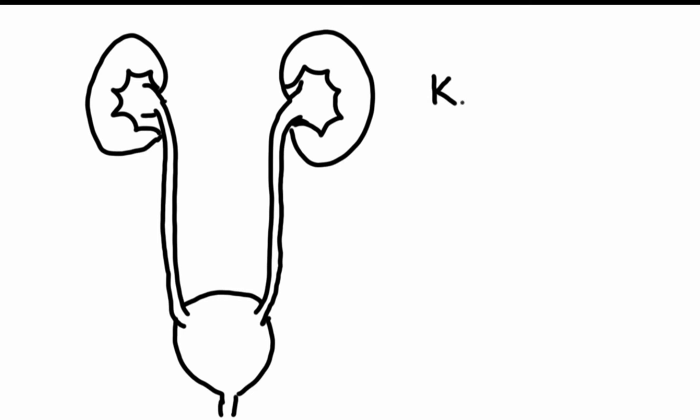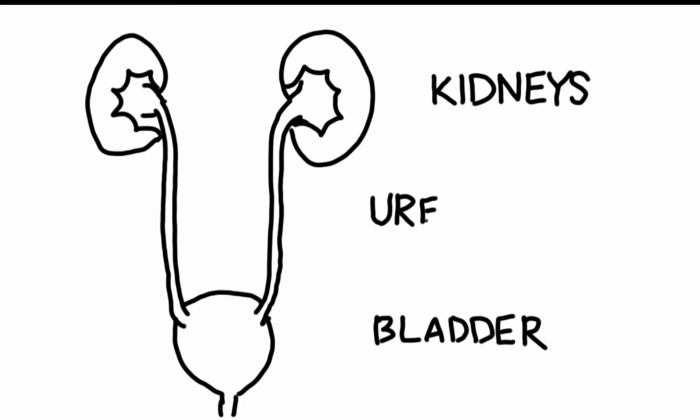Kidneys filter our blood, keeping in good things like protein and letting waste out to make urine. The urine drains from each kidney into the bladder through a tube called a ureter. The bladder stores urine for a few hours until you're ready to get rid of it. It then comes out of your body through another tube called the urethra.